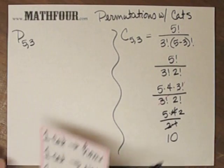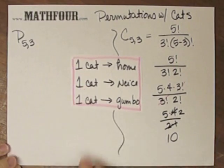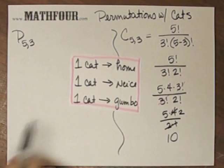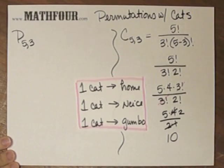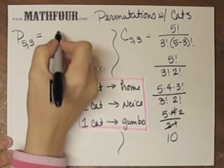The interesting thing was, though, that we suggested maybe we take one cat home, give one cat to my niece, and make gumbo out of the other cat. In that case, these three cats are doing different things, so if they're doing different things, it's a permutation.